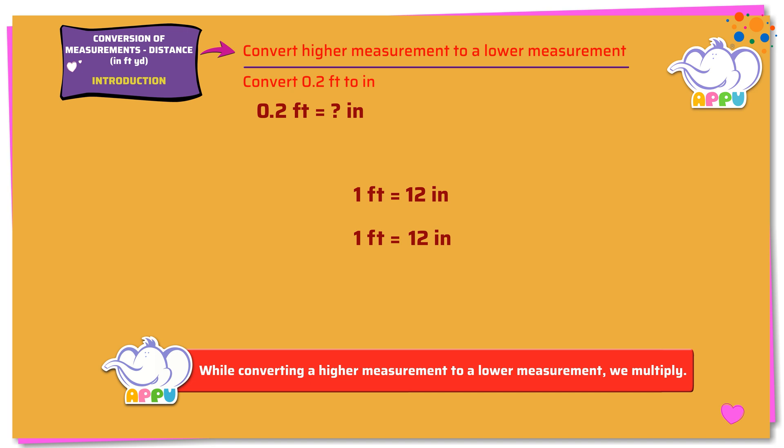Multiplying both sides by 0.2, we get 0.2 times 1 foot equals 0.2 times 12 inches. 0.2 times 1 foot equals 0.2 feet. 0.2 times 12 inches equals 2.4 inches.